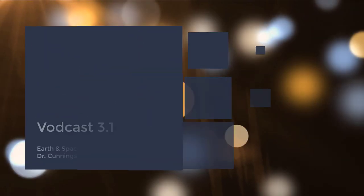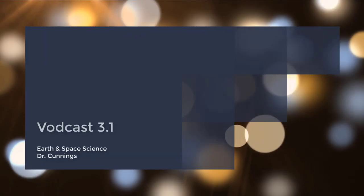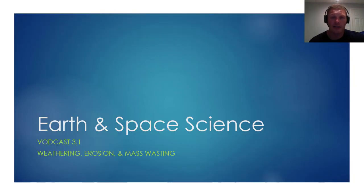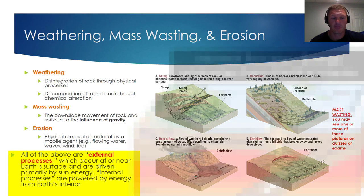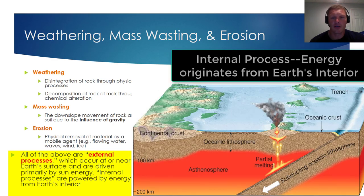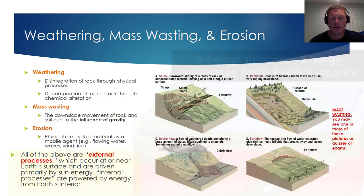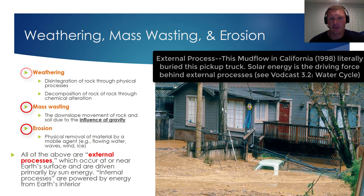Hello and welcome to vodcast 3.1. In chapter 3 we will focus on landscapes fashioned by water, and this first vodcast focuses on weathering, erosion, and mass wasting. It's important that we understand the difference between an external process and an internal process. Internal processes derive their energy from Earth's interior and include things like mountain building and volcanic activity. Weathering, mass wasting, and erosion are all external processes that occur at or near Earth's surface and are primarily driven by energy from the Sun.